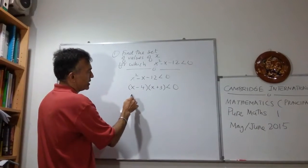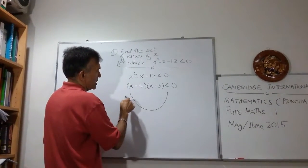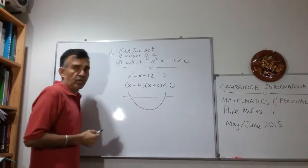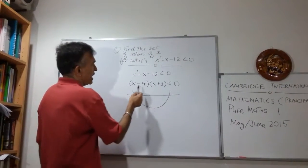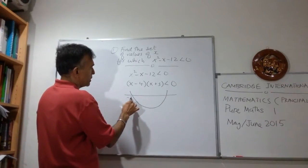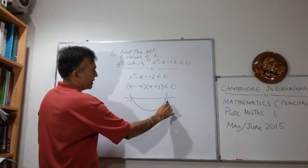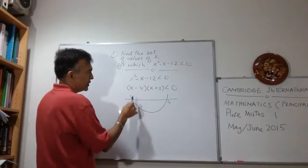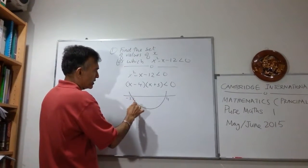So now let's use the graphical method. This is my horizontal axis. And we're looking at negative 3 and 4. So let's plug in negative 3 and a 4 less than 0. So below the axis. So we're looking at this region.